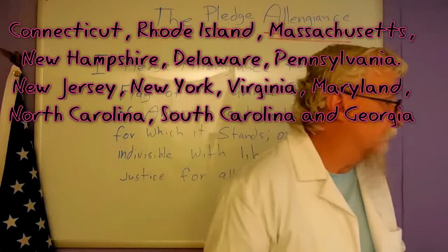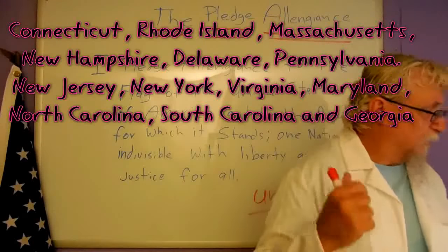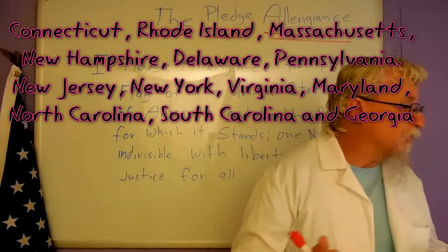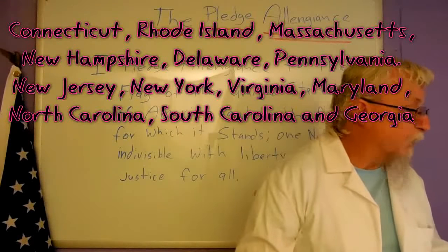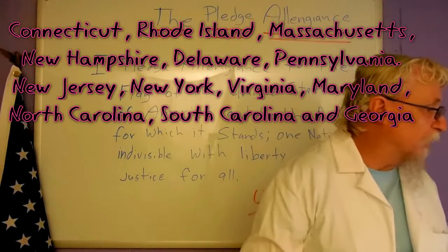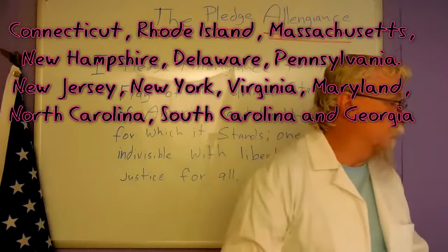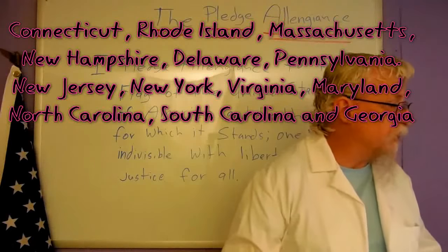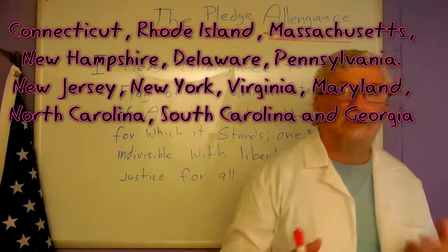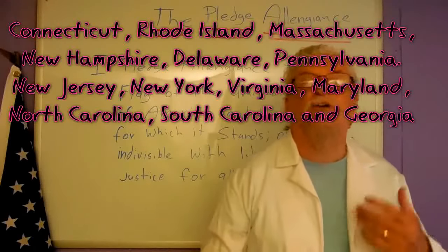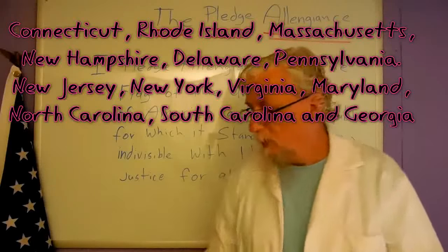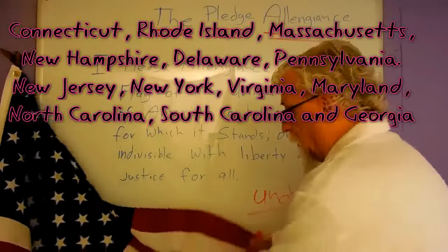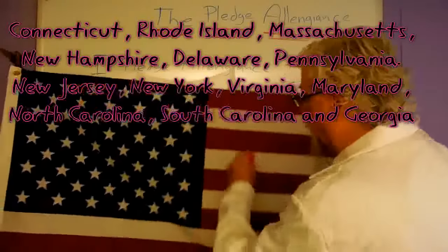These are states now, but they were called colonies. It was Connecticut, Rhode Island, Massachusetts, New Hampshire, Delaware, Pennsylvania, New Jersey, New York, Virginia, Maryland, North Carolina, South Carolina, and Georgia. That's the 13 colonies when we first came to America.